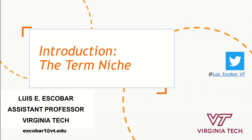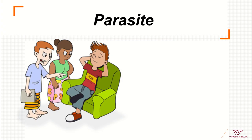Before we start defining what a niche is, let's talk about pathogens, parasites, and diseases. Parasites are defined as a relationship between two species where one is receiving benefits but the other is not. So one takes without benefiting the other species.